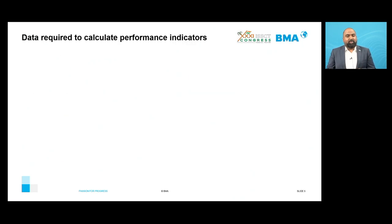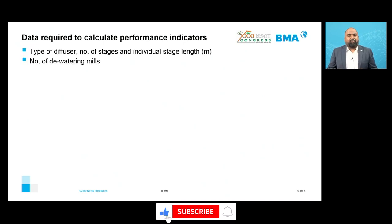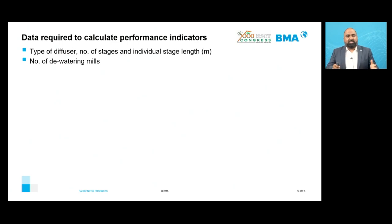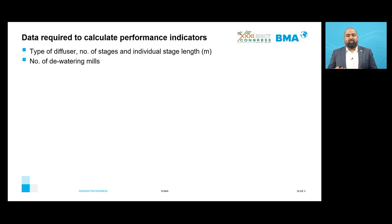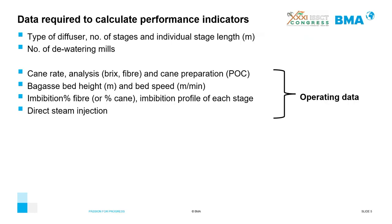To calculate the performance indicators, we need to know whether it is a cane diffuser or a bagasse diffuser, the number of stages, the length of individual stages, and how many dewatering mills the diffuser has. In terms of operating data, we need the cane rate, cane analysis, preparation index defined by the POC, bagasse bed height, bed speed, imbibition percent fiber as a factory-set target, the imbibition profile for each stage, and whether the factory is using direct steam injection into the bagasse bed — since that steam condenses into water and becomes part of the juice.